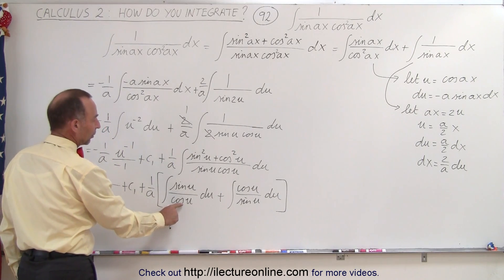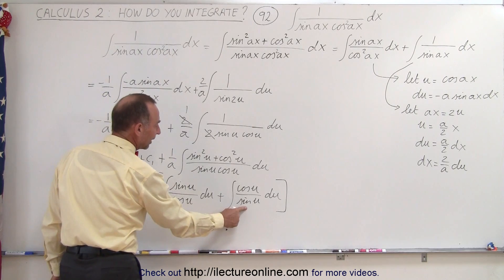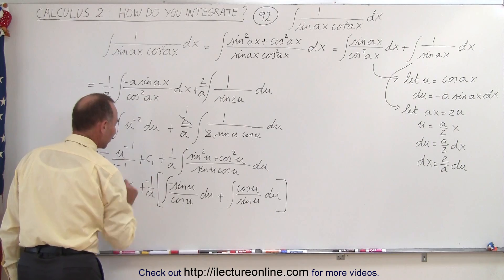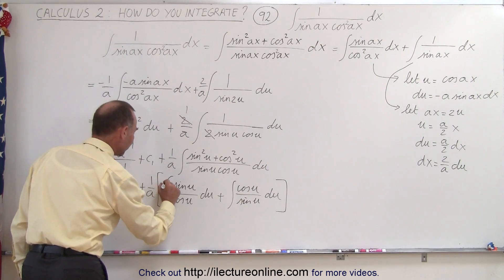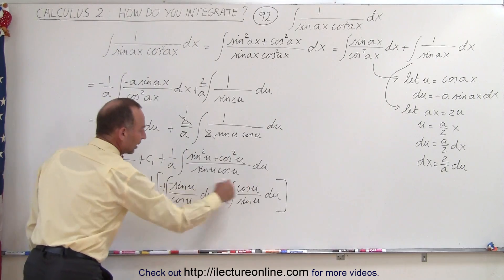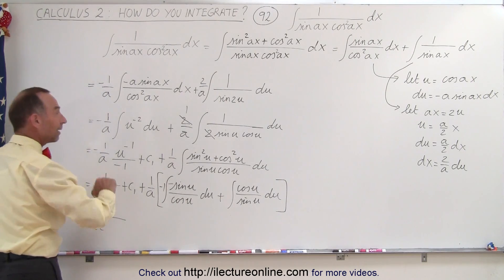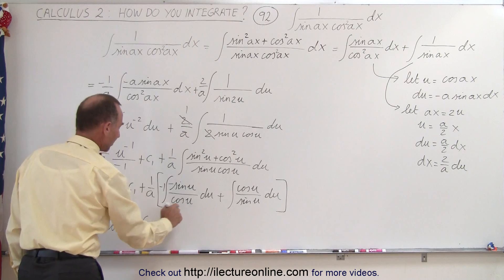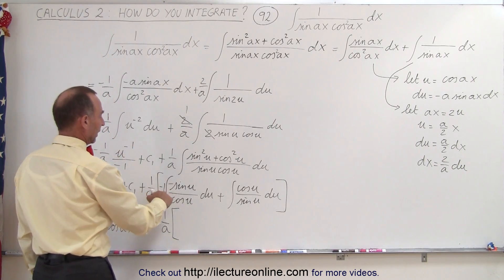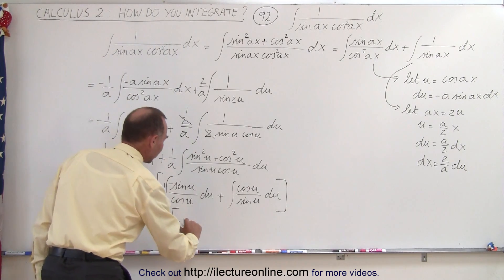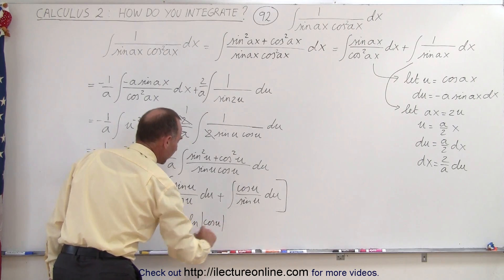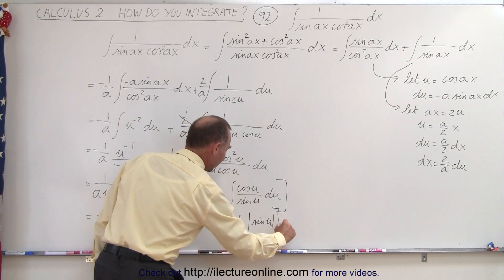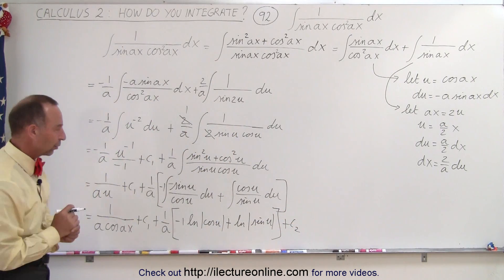We can simplify this. This becomes equal to 1 over A times U — and remember, U for the first integral was cosine of AX, so we'll make that replacement — plus a constant of integration. Here, this will be plus 1 over A times two integrals: the integral of the sine of U over the cosine of U DU, plus the integral of the cosine of U divided by the sine of U DU. The derivative of the cosine is the negative sine, and the derivative of the sine is the cosine, so what we have here is DU over U forms. We need to put a negative 1 in front of that first one.